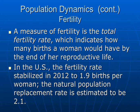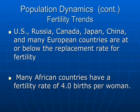A measure of fertility is the total fertility rate, which indicates how many births a woman would have by the end of her reproductive life. In the U.S., the fertility rate stabilized in 2012 to 1.9 births per woman. The natural population replacement rate is estimated to be 2.1. Some of the fertility trends we are seeing in the world today is that some areas of the world are at or below the replacement rate for fertility.